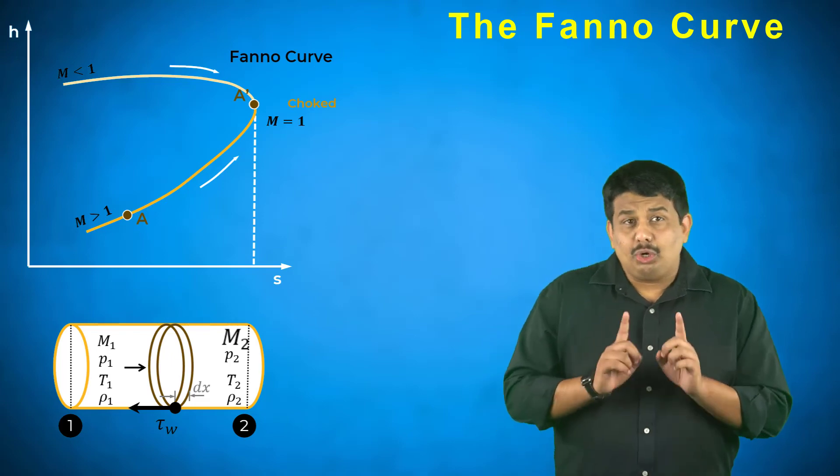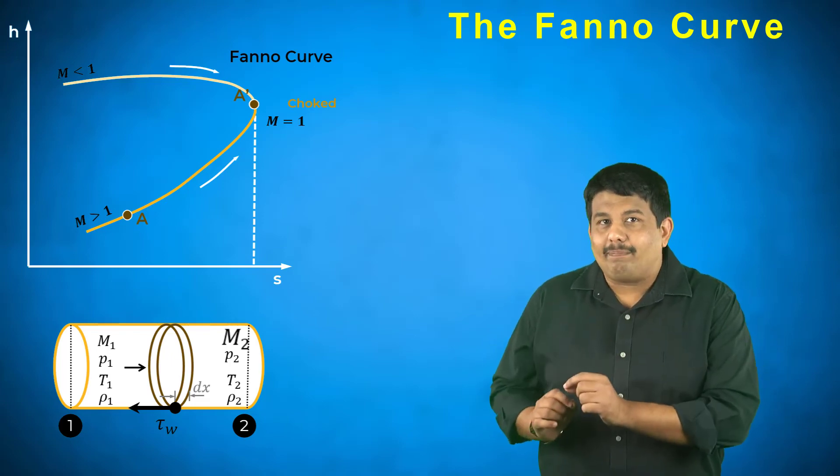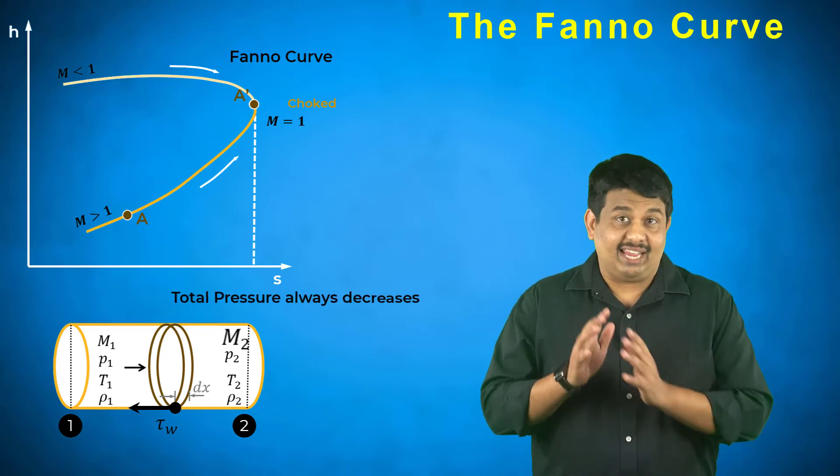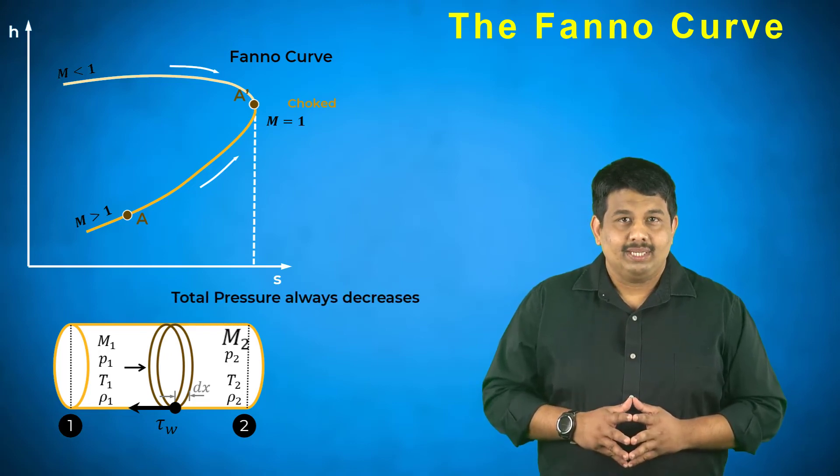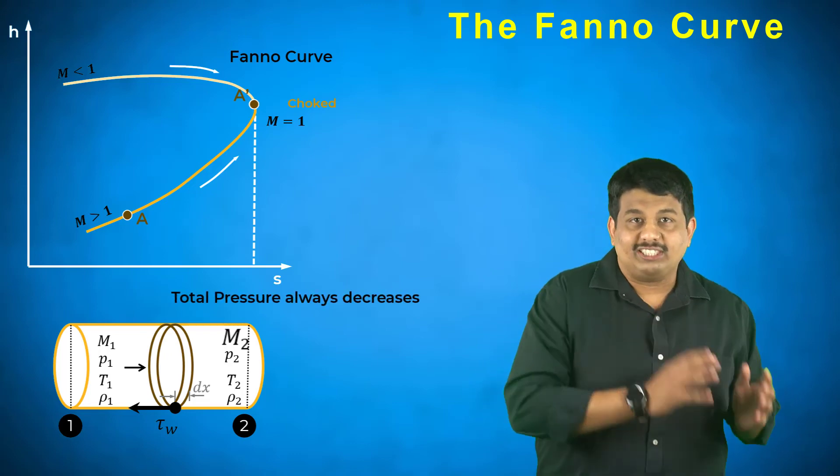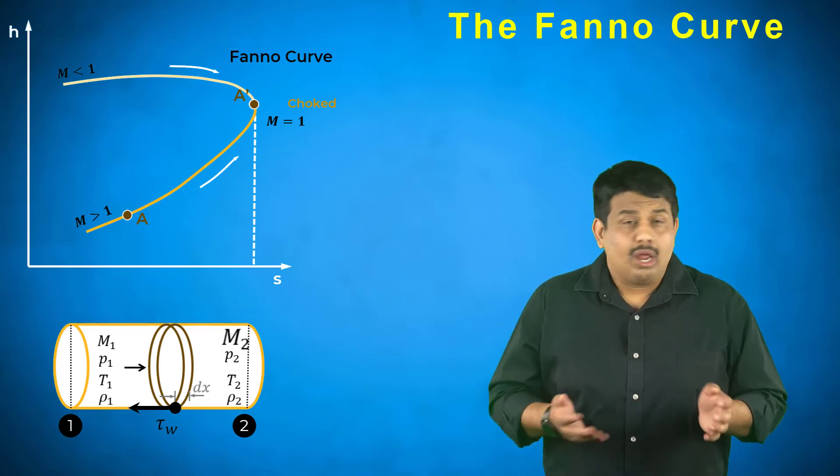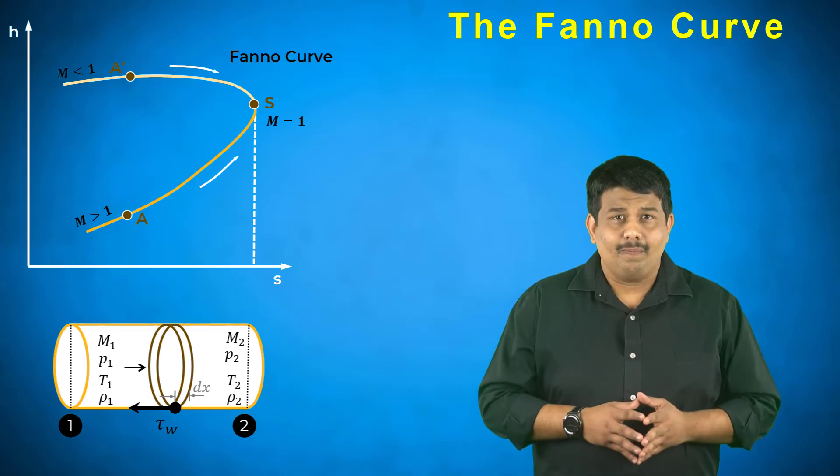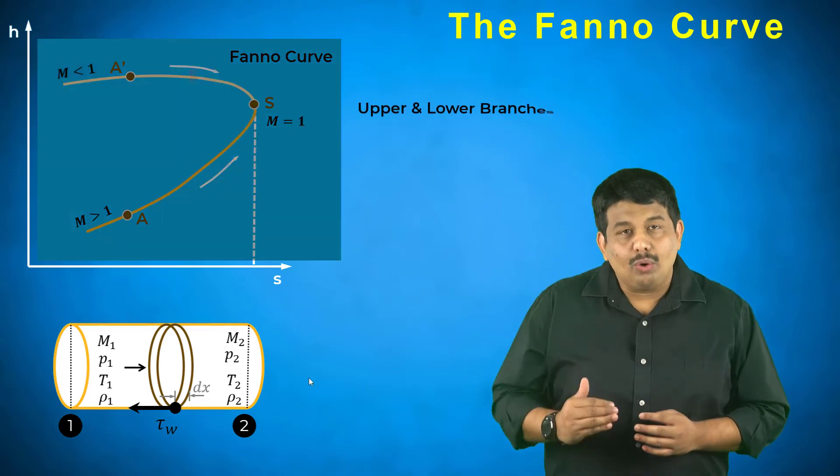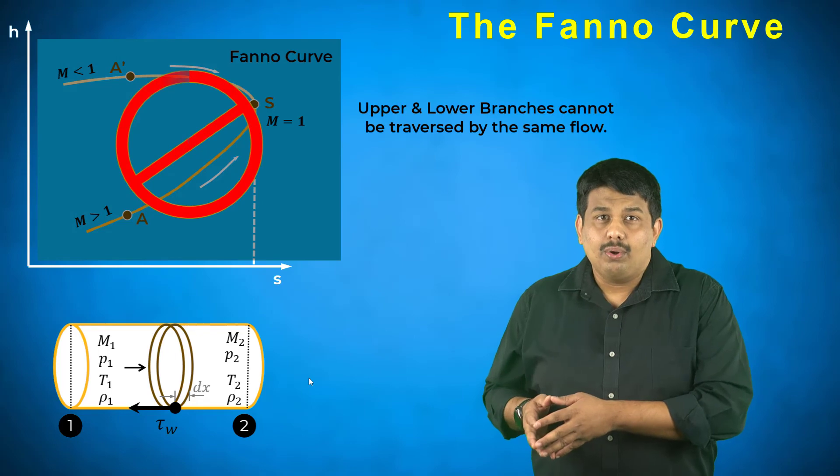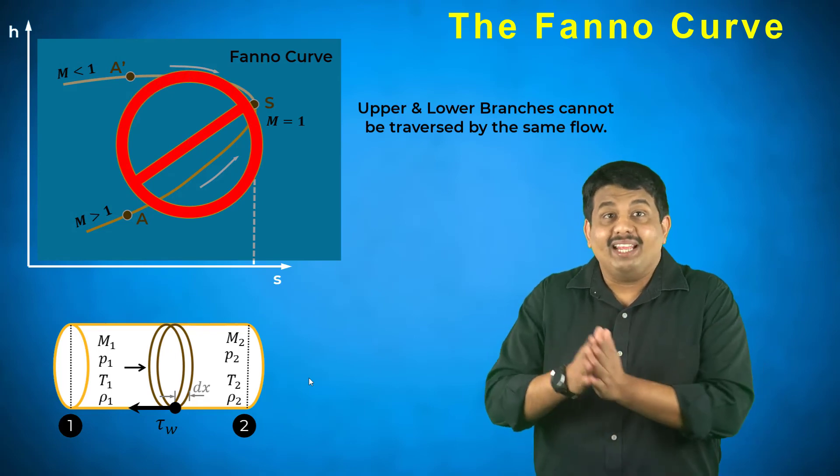It is important to understand that the total pressure always decreases in Fanno flow. This is observed for both subsonic and supersonic inlet conditions. Also, contrary to the Rayleigh flow, the upper and lower branches of the Fanno flow cannot be traversed by the same flow.